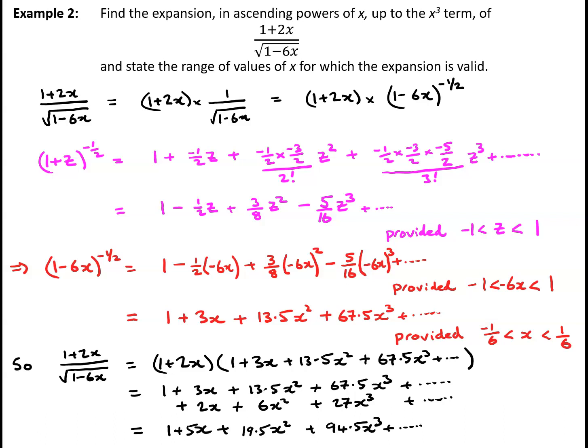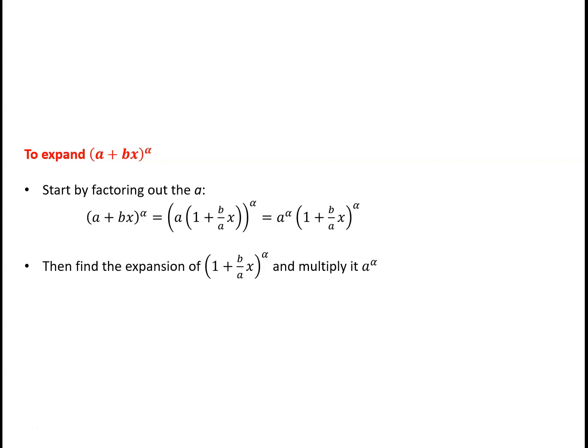Now, if we need to expand something like a plus bx to the power alpha, the important thing is to start by factoring out the a. So a plus bx to the power alpha is the same as a times 1 plus b over a times x, all to the alpha, which equals a to the alpha times 1 plus b over a times x to the alpha. We can then find the expansion of 1 plus b over a times x to the alpha in a similar way to the previous examples.